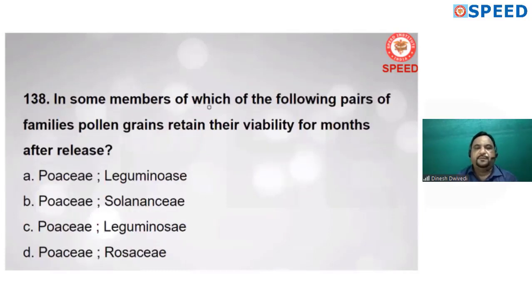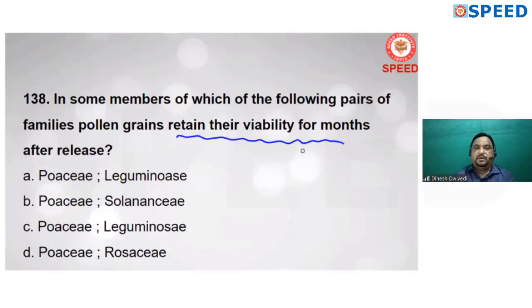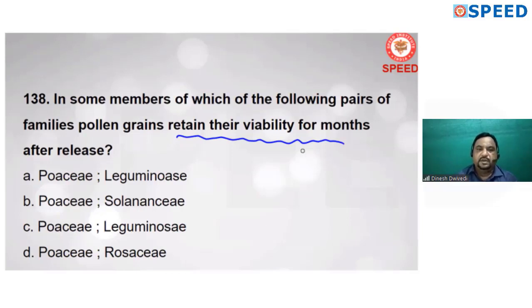Next question: in some members of which families do pollen grains retain their viability for months? When pollen grains are formed and dispersed, they maintain viability for months in the case of the Rosaceae family and the Leguminosae family.